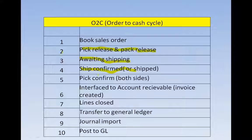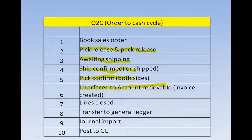Once shipping is done and pick confirm is completed from both the sending and receiving ends, the next step is interfacing it to Accounts Receivable. This means that once the item is delivered to the customer's location, we should recognize the revenue. For example, if the laptop costs 50,000, we recognize 50,000 as revenue, identify it in the form of Accounts Receivable, and hence an invoice is generated.